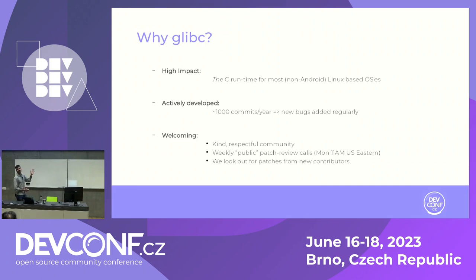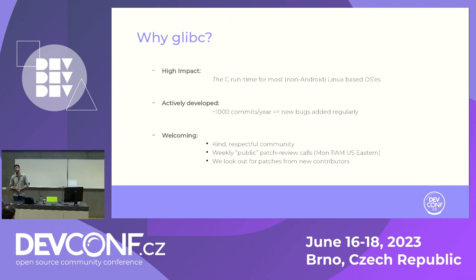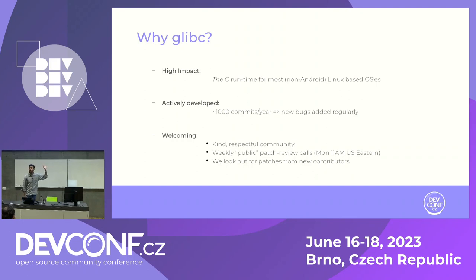Why might you want to contribute to glibc? The first reason, at least for me, is that it's very high impact. There are millions of installations. It is the C library for the majority of non-Android Linux-based operating systems. If you make a change in malloc that shows up on the critical path, you're looking at trillions of executions of the code you wrote in a week. Every time malloc runs, your code is in there doing something.